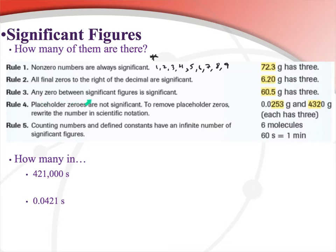Rule three: any zero between significant figures is significant. For example, 60.5 — the 6 and the 5 count. The zero in the middle is between two significant values, so it is also significant. All three numbers in 60.5 are significant figures.